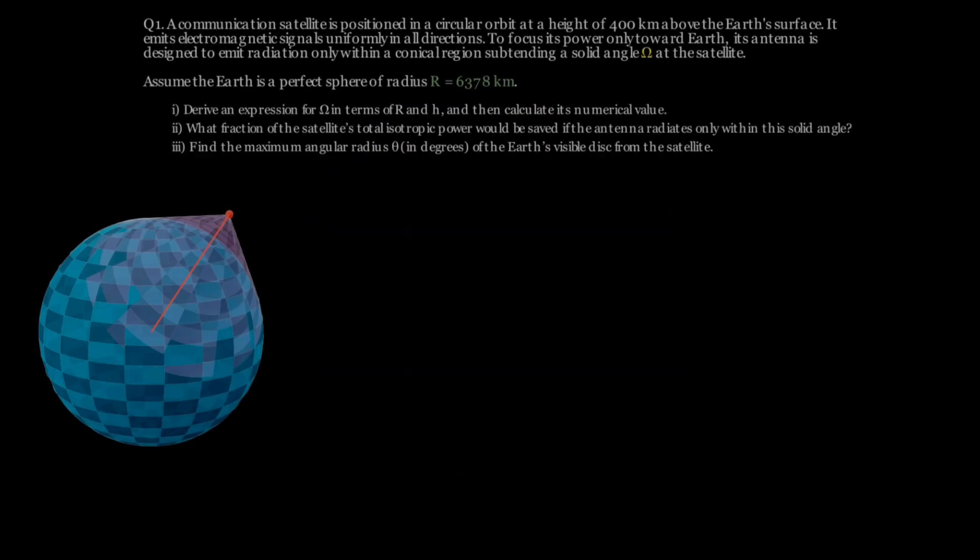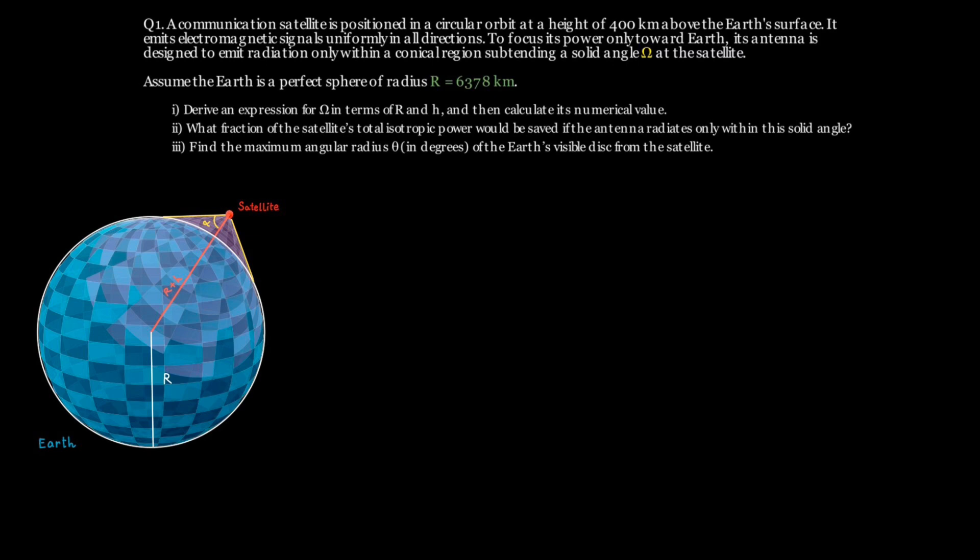Let's put this down alongside our problem. We have our Earth of radius capital R and the satellite at a distance r plus h from the Earth's center with the cone of coverage having a half-angle alpha. This cone is tangent to the Earth and extends downward from the satellite. Its base intersects the Earth's surface in a circular cap and you can see the tangential lines drawn here and this geometry will help us calculate the subtended solid angle using the formula we derived earlier.